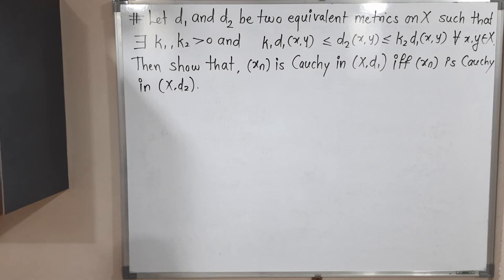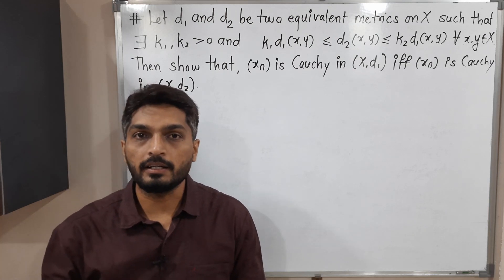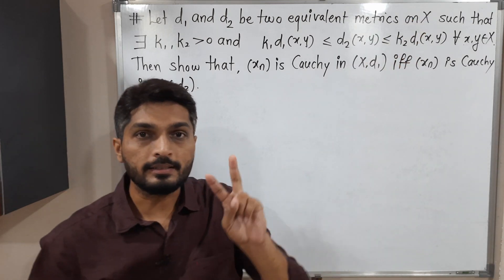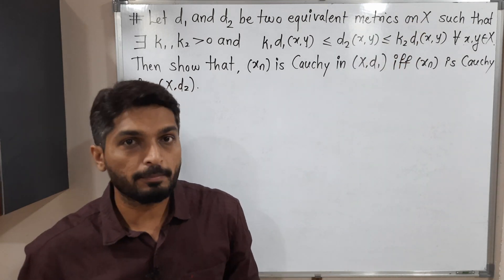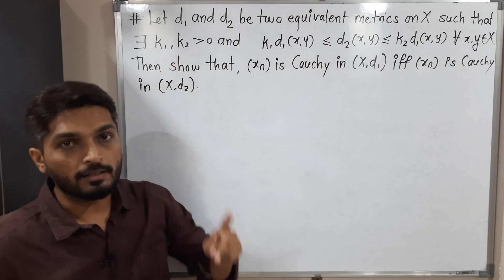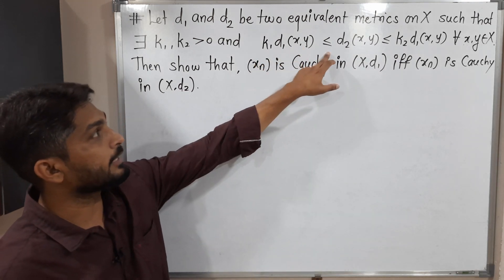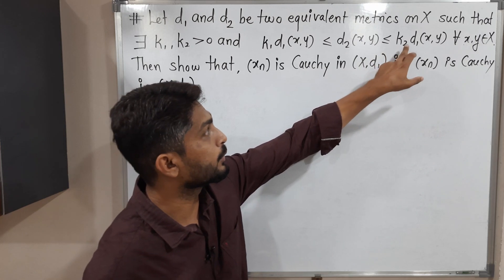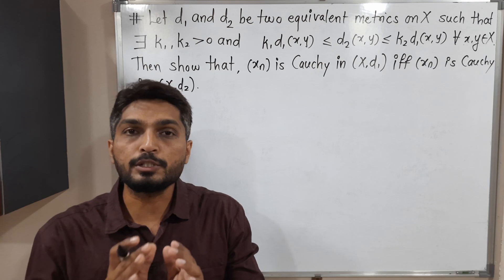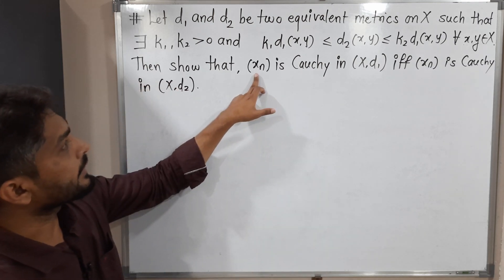In this video we are going to discuss this result. We have two metrics d1 and d2, both defined on a set X. These d1 and d2 are equivalent metrics, and we have the inequality: there exist two positive real numbers k1 and k2 such that k1·d1(x,y) ≤ d2(x,y) ≤ k2·d1(x,y) for all x,y in X.